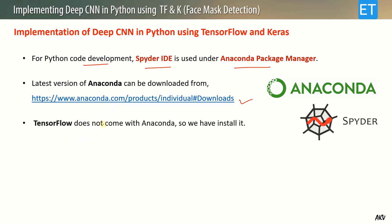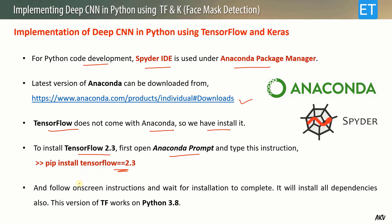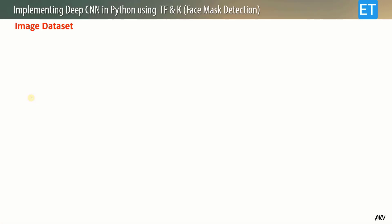TensorFlow does not come with Anaconda, so we have to install it. To install TensorFlow 2.3 — the latest version at this time — open the Anaconda prompt and type: pip install tensorflow==2.3. Follow all on-screen instructions and wait for installation to complete; it will download a list of dependencies. This TF version works on Python 3.8, which the latest version of Anaconda also includes.